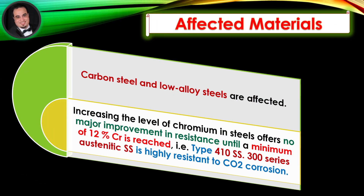Affected materials: Carbon steel and low alloy steels are affected. Increasing the level of chromium in steels offers no major improvement in resistance until a minimum of 12% Cr is reached. For example, type 410 stainless steel and 300 series austenitic stainless steel are highly resistant to CO2 corrosion.